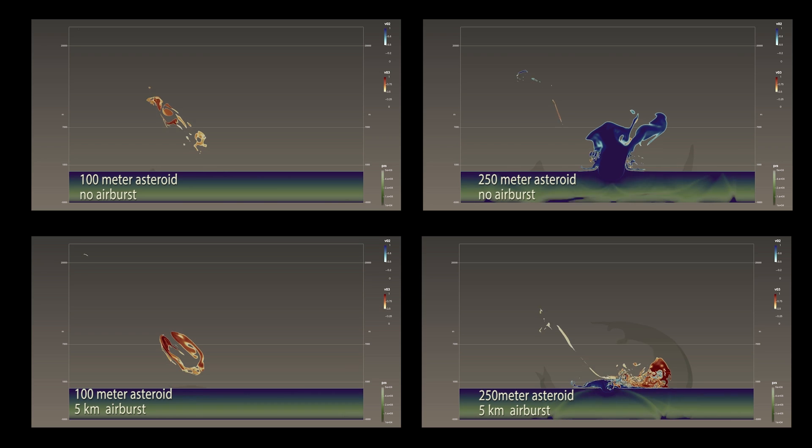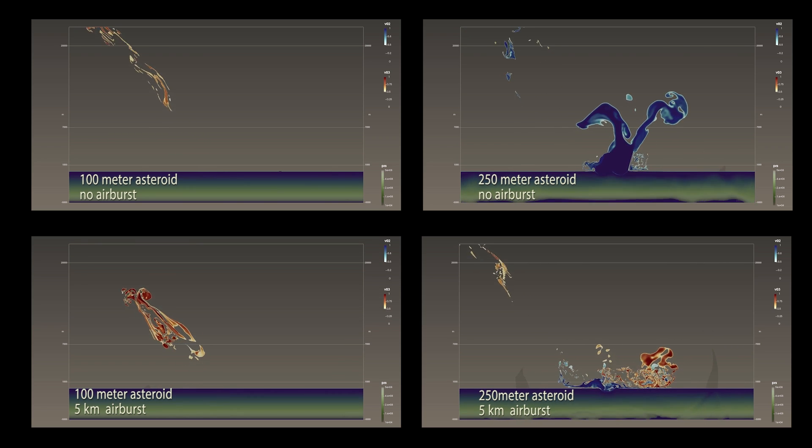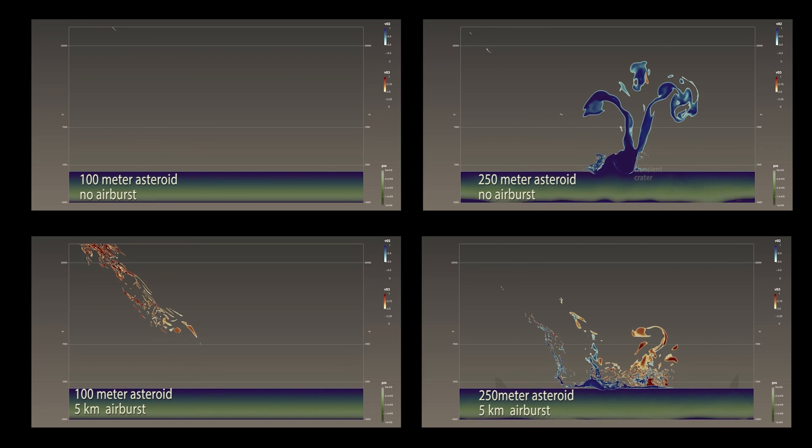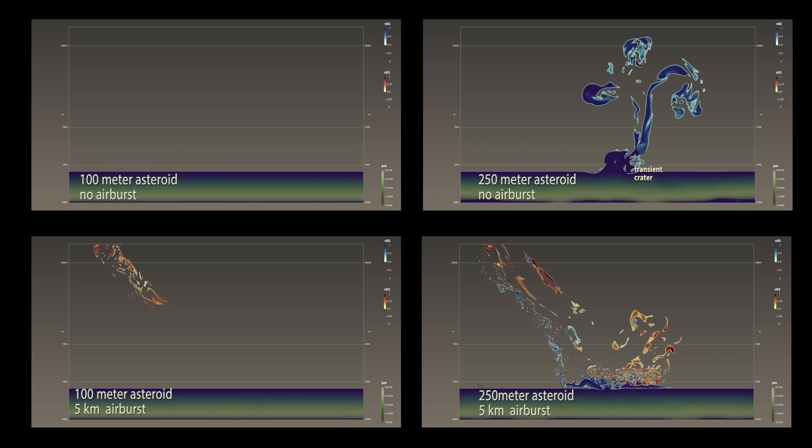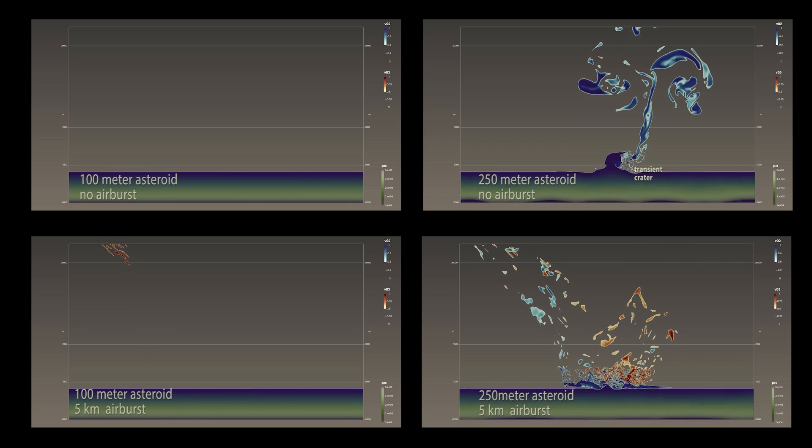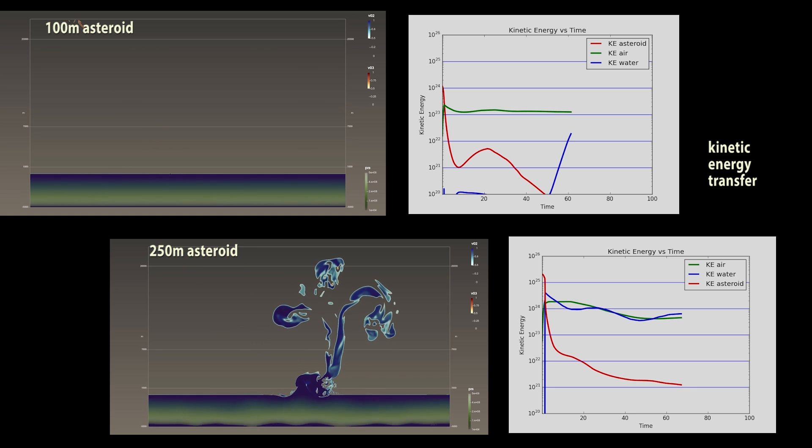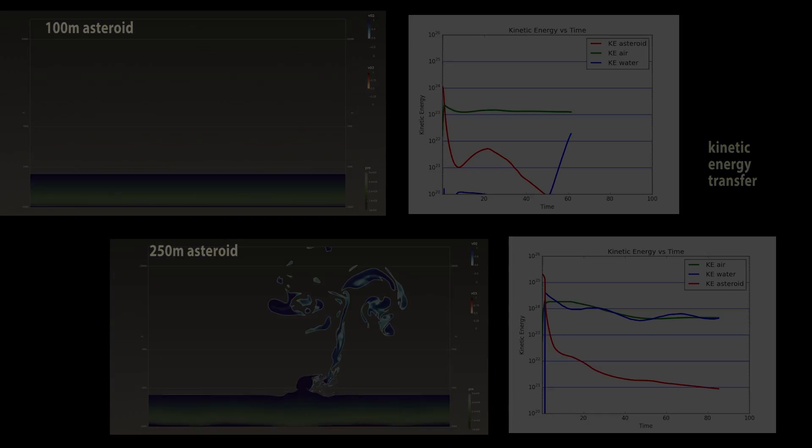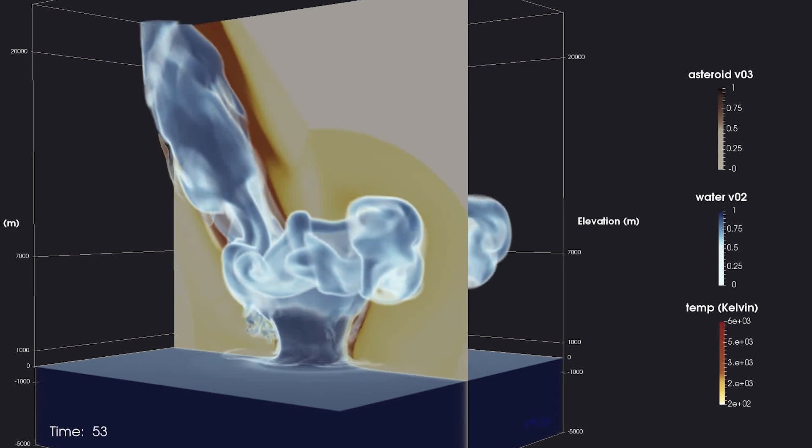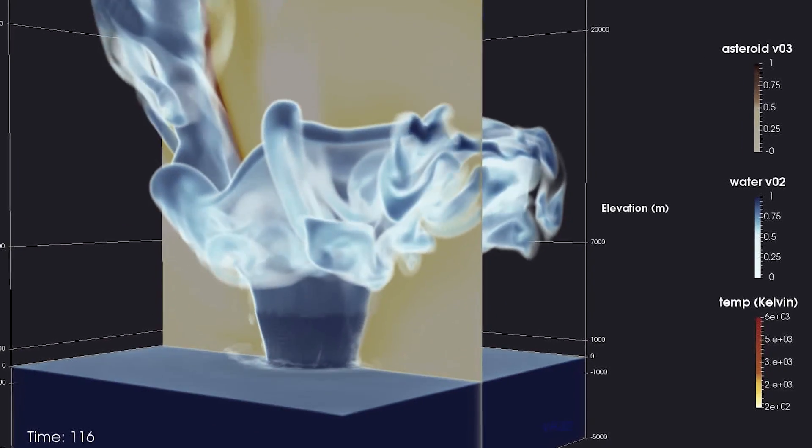Slicing through the dataset reveals more detail. The largest impact simulation shows development of a transient crater and a large plume of water and water vapor. Here we see two cases varying asteroid size, with a plot on the right showing the transfer of kinetic energy from the asteroid to the water and air.